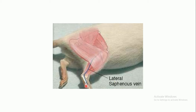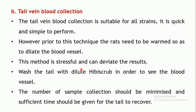The lateral saphenous vein runs dorsally and laterally towards the tarsal joint on the hind limb. This area is shaved to expose the vein, and the blood sample is then collected from this site.